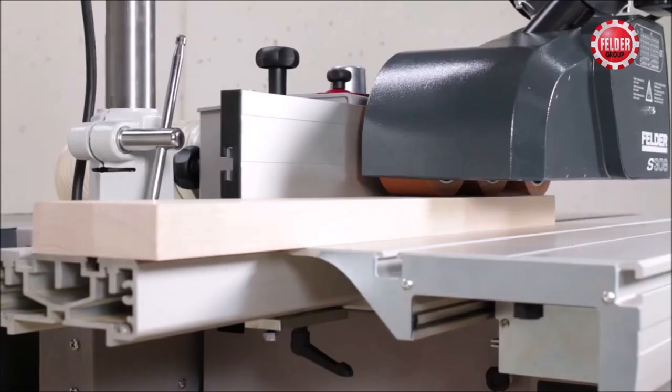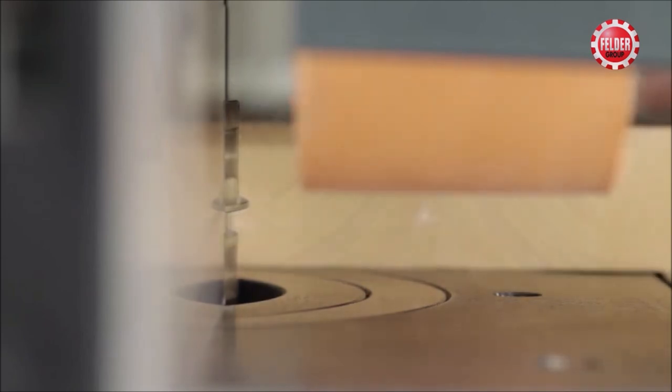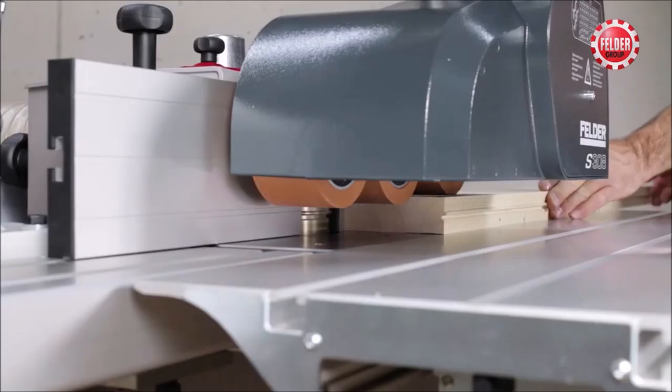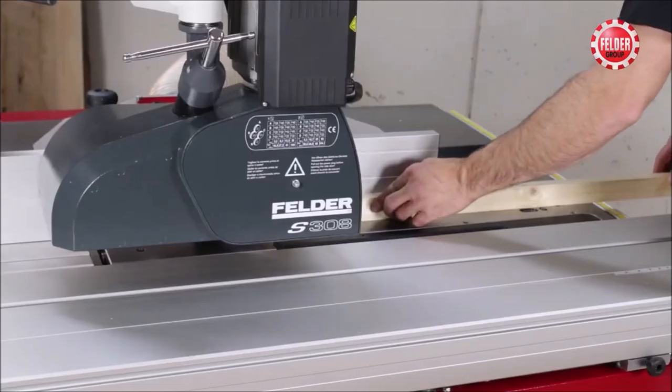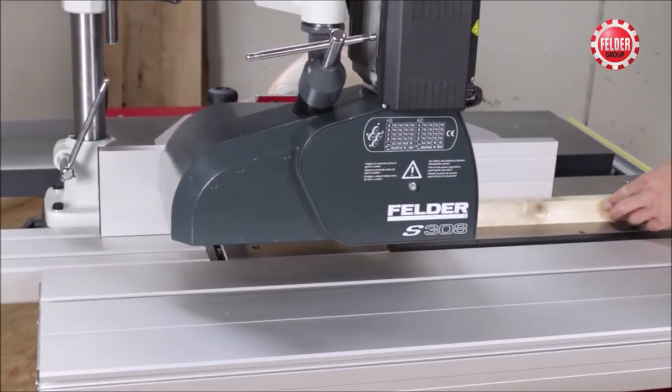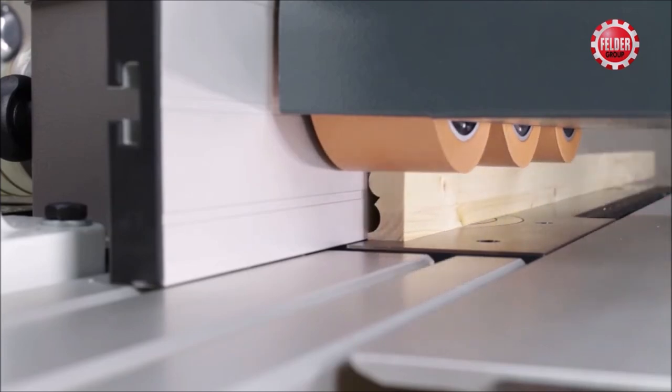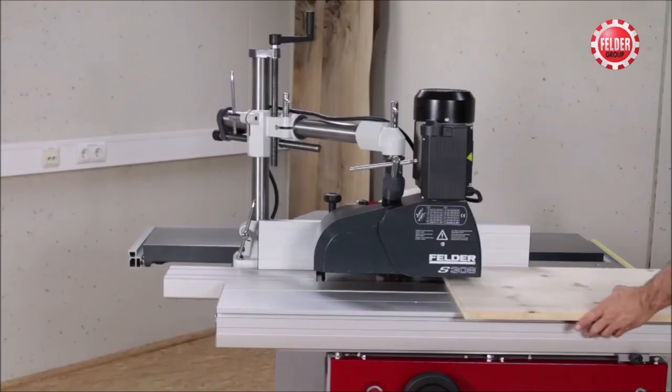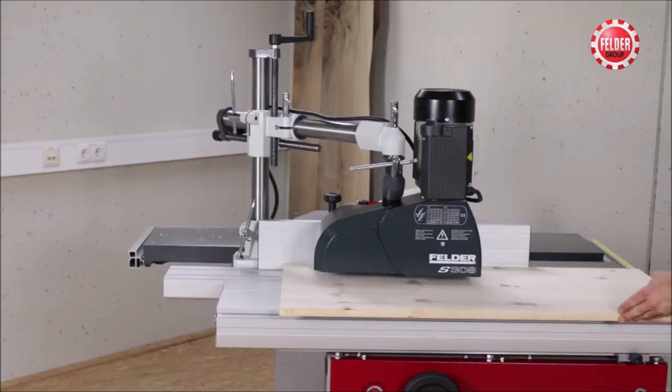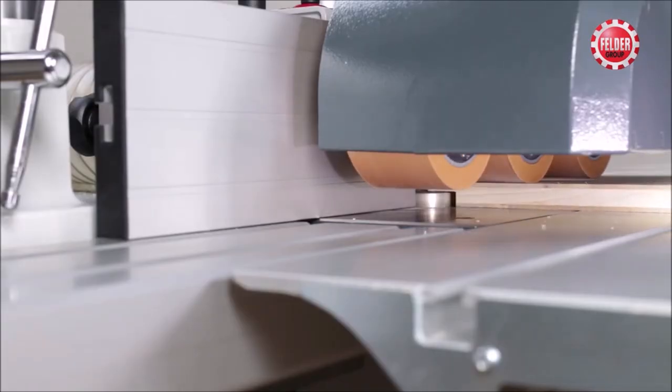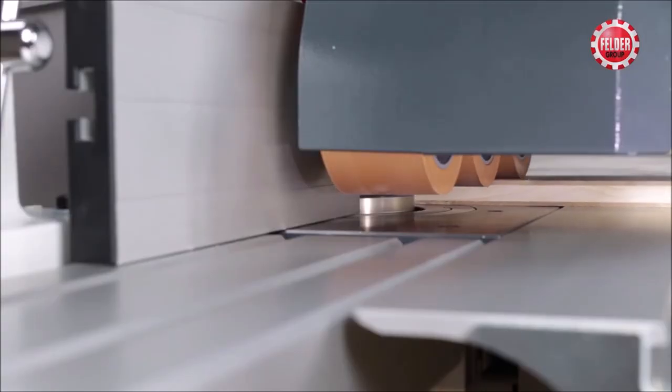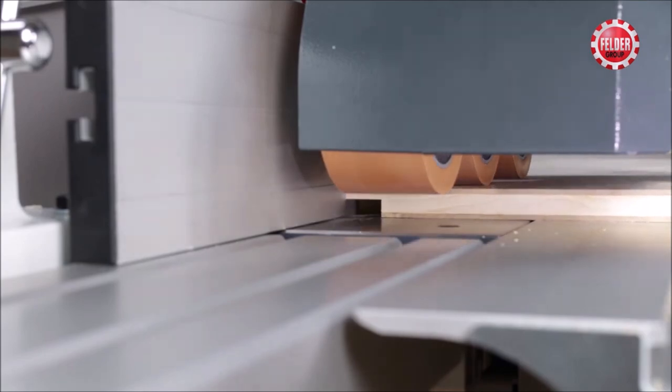The power feeder boasts eight feed speeds ranging from 3.2 to 63 meters per minute for both forward and reverse movements, allowing users to customize the feed rate based on specific project requirements. Its reliability and constant feed rate contribute to smoother workflow and enhanced craftsmanship. Whether you're a professional woodworker or a passionate hobbyist, the S308 Standard Power Feeder is an indispensable addition to any workshop, promising high-quality and efficient results in every use.